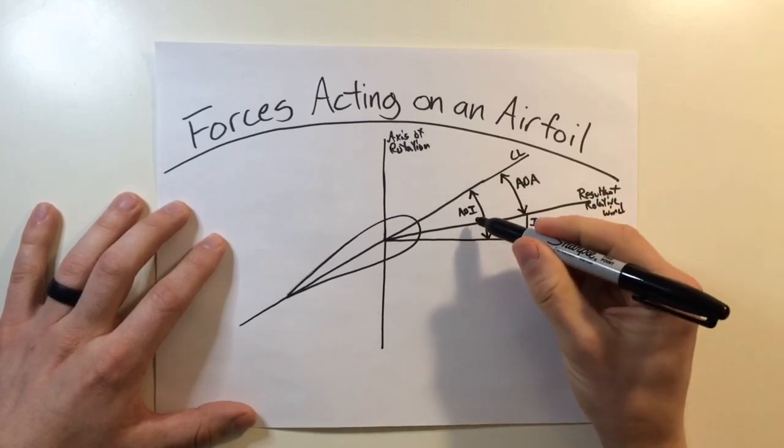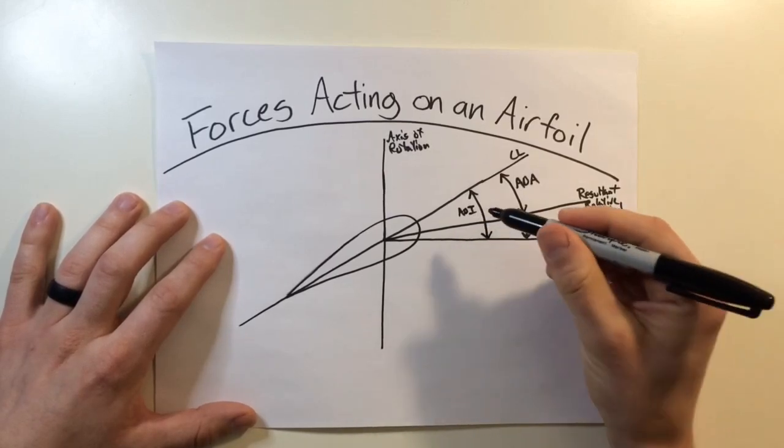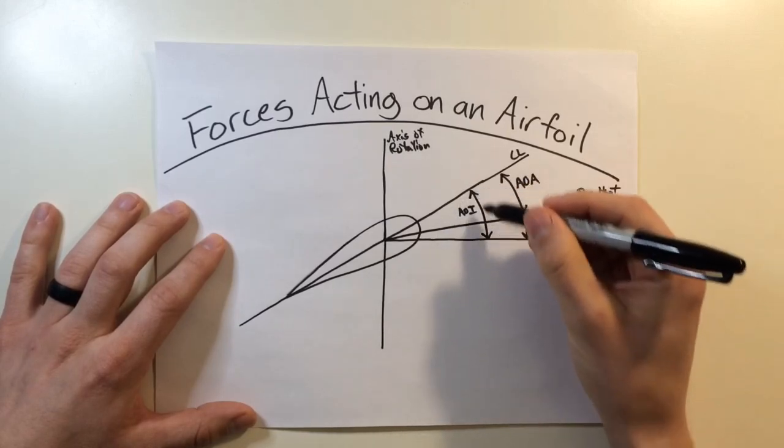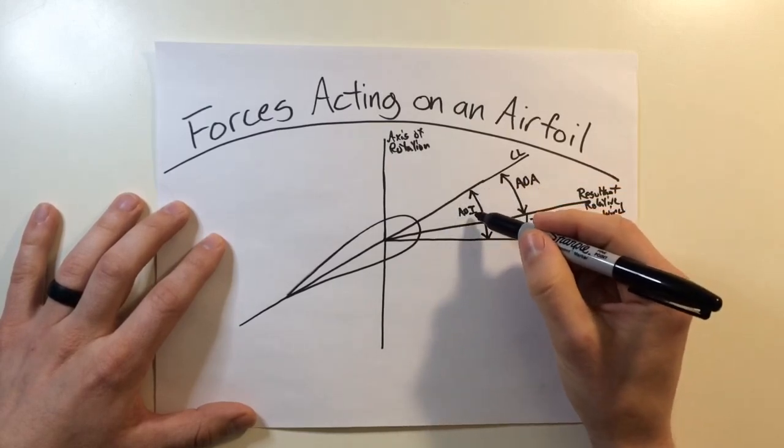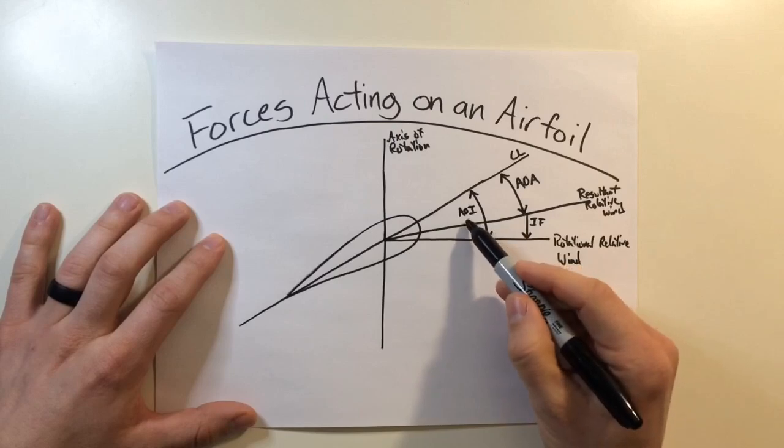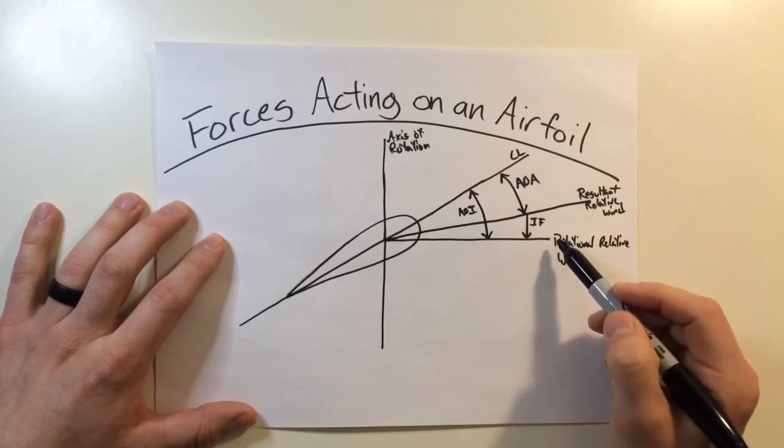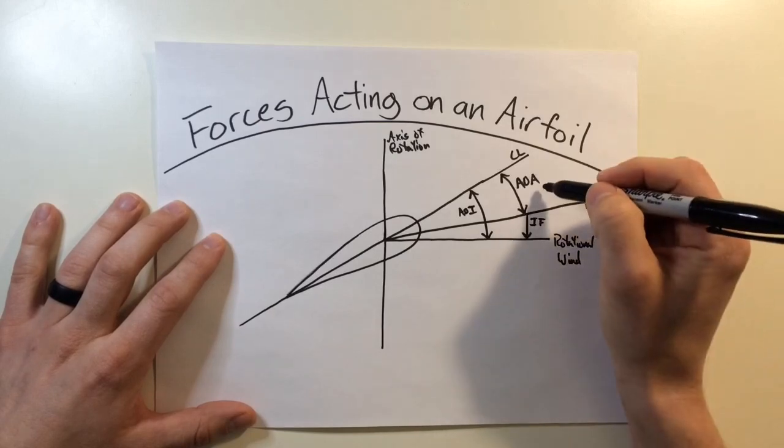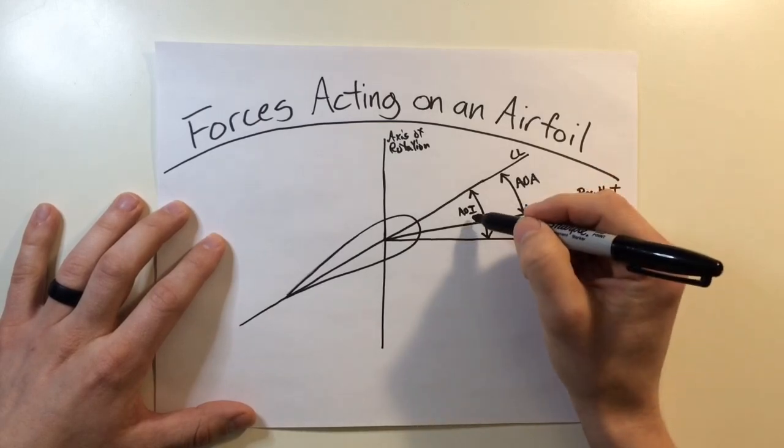The angle of incidence is going to be a mechanical angle. We directly control this with collective and cyclic inputs. We are changing the pitch angle in the blade and adjusting this angle of incidence. The angle of attack is an aerodynamic angle, which is a product of our angle of incidence and our induced flow. So we may want to increase our angle of attack, but we actually control it by our angle of incidence.